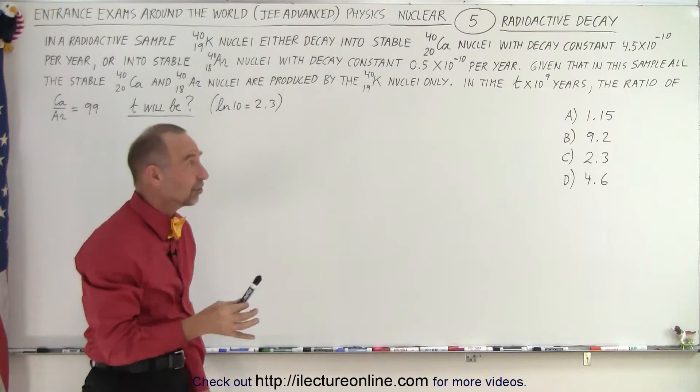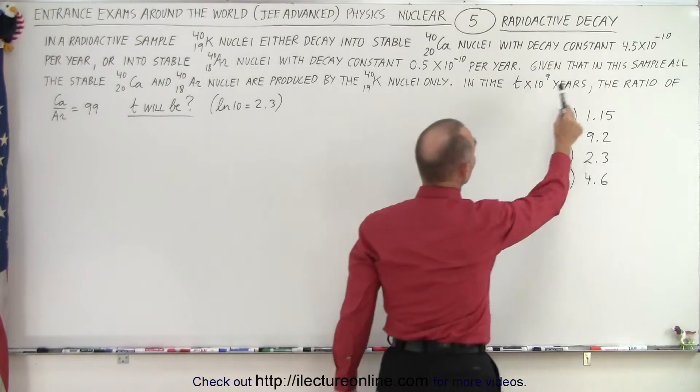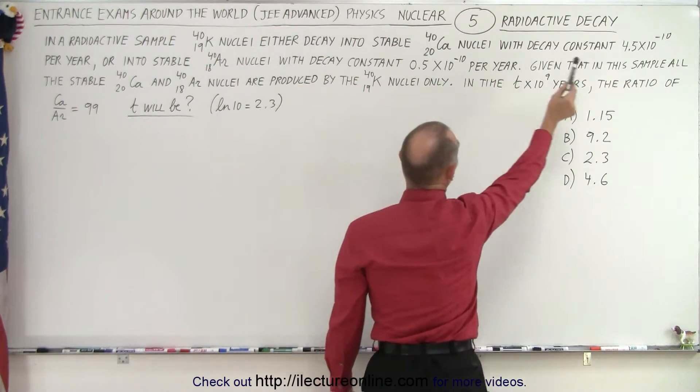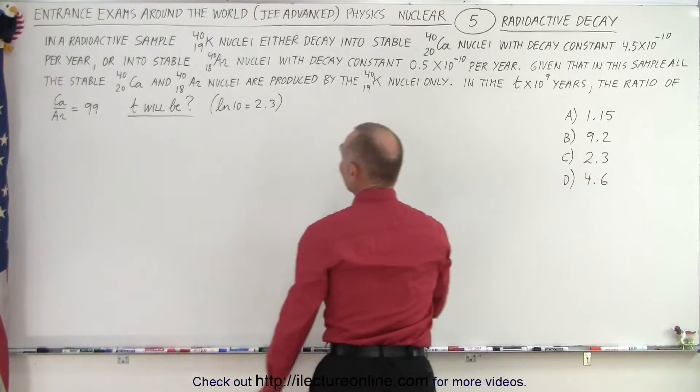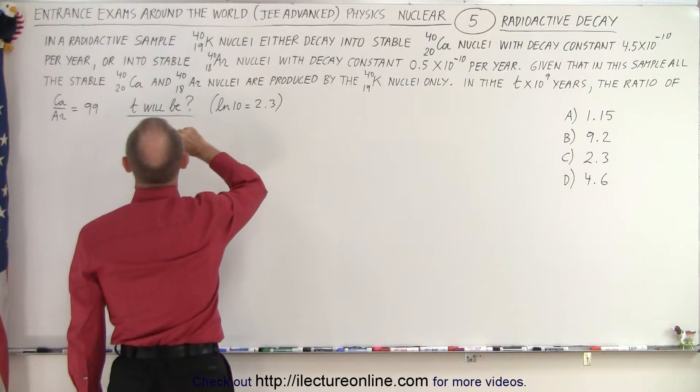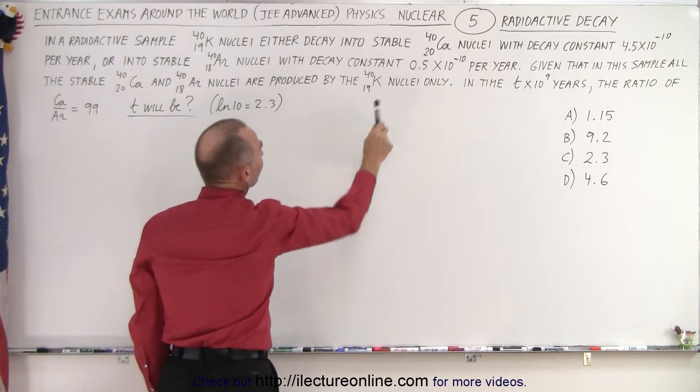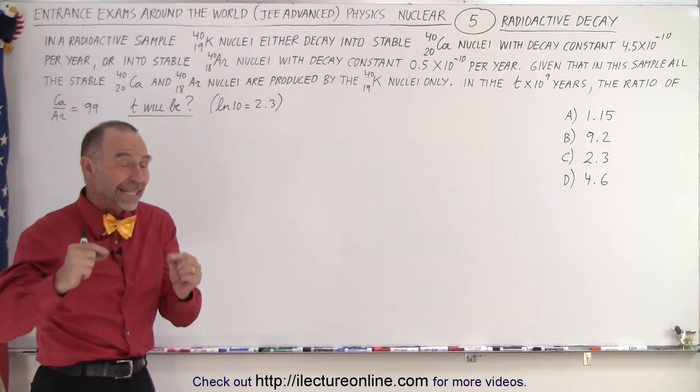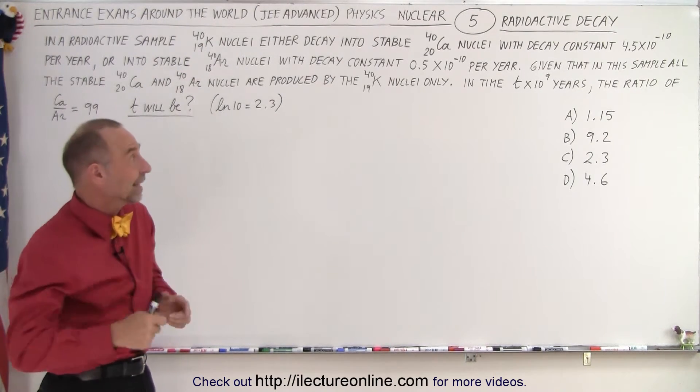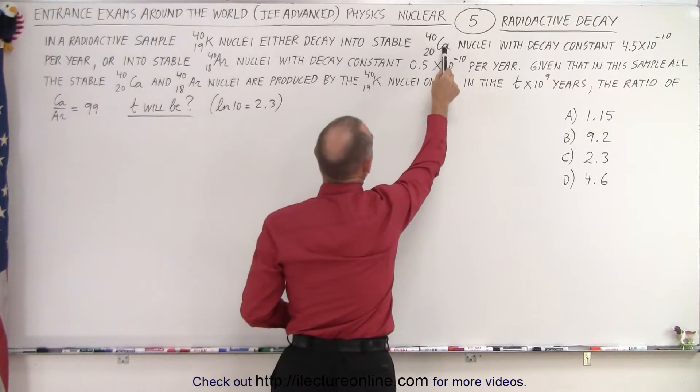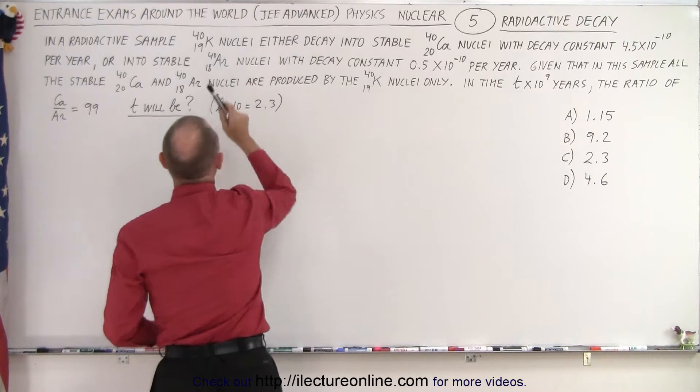It can decay into calcium-40 or it can decay into argon-40. Now notice they give us the decay constant of each. For calcium it's 4.5 times 10 to the minus 10 per year, and for potassium to argon it is 0.5 times 10 to the minus 10 per year. The larger the decay constant, the faster the decay. So the potassium decays into calcium much faster than it decays into argon.